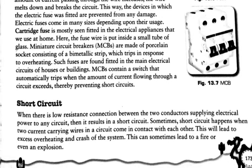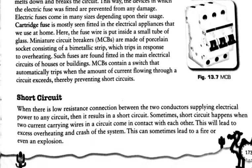MCBs contain a switch that automatically trips when the amount of current flowing through a circuit exceeds the safe limit, thereby preventing short circuits and any type of danger caused by over-limit current flow.